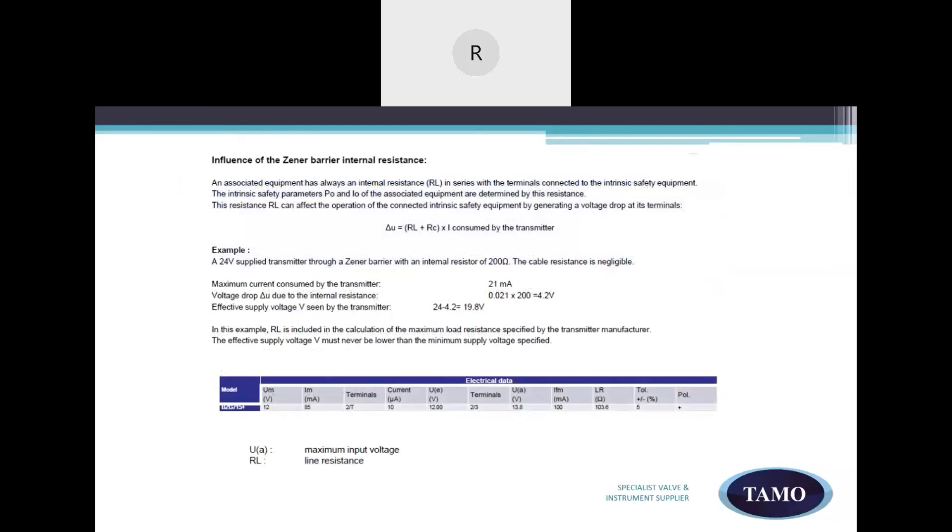The voltage drop across terminals. An associated equipment always has an internal resistance with the terminals connected to the intrinsically safe equipment. This resistance can affect the operation of the connected intrinsically safe equipment by generating a voltage drop at its terminals. So careful calculation must be done to ensure that there is sufficient power at the field device in the hazardous zone. The effective supply voltage must never be lower than the minimum supply voltage supplied by the manufacturer.